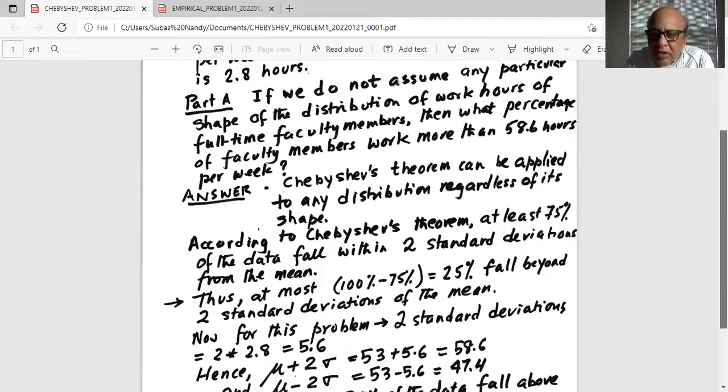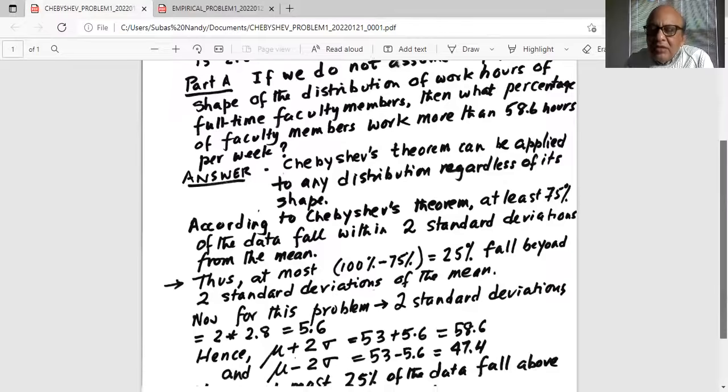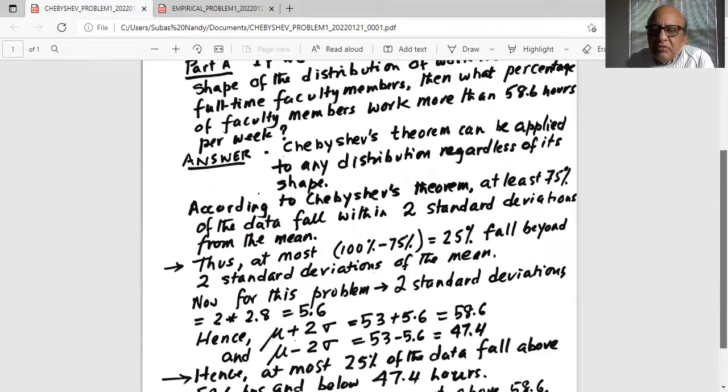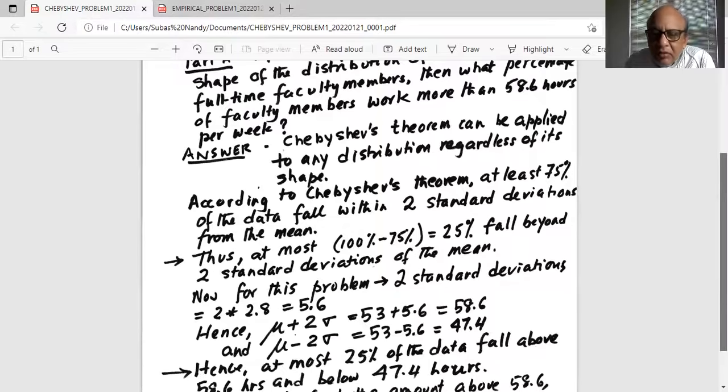On the left of the mean and on the right of the mean. Two standard deviations on the left of the mean and two standard deviations on the right of the mean. Thus, at most 100% minus 75%, which is equal to 25%, fall beyond the two standard deviations from the mean.